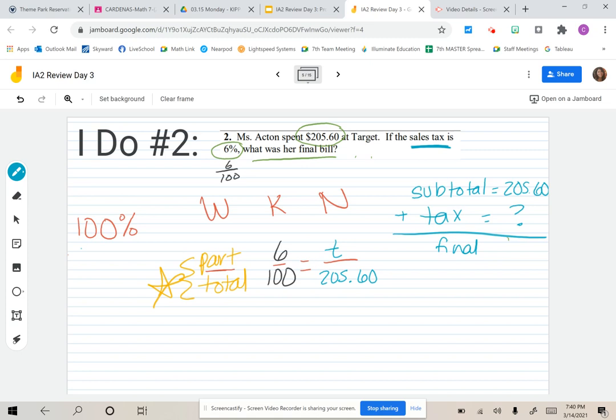How do we solve? We cross multiply and divide. $205.60 times 6 gets us $1,233.60. 100 times T is on the right-hand side. Now that we've cross multiplied, we divide both sides by 100. Once we divide by 100, our T, or our tax, is $12.34 after rounding.